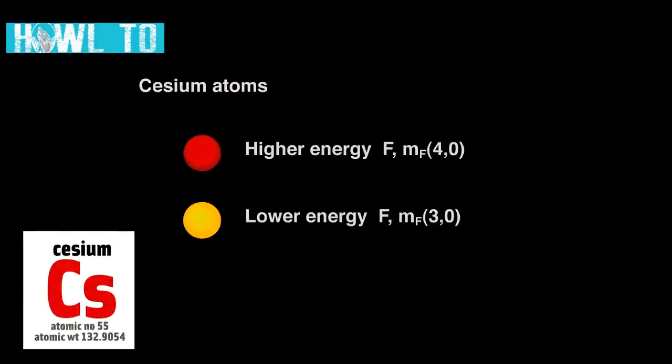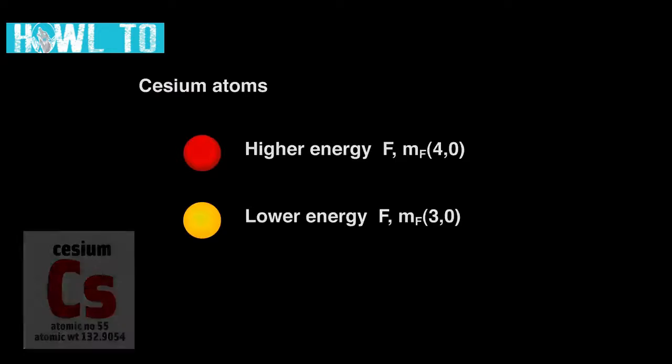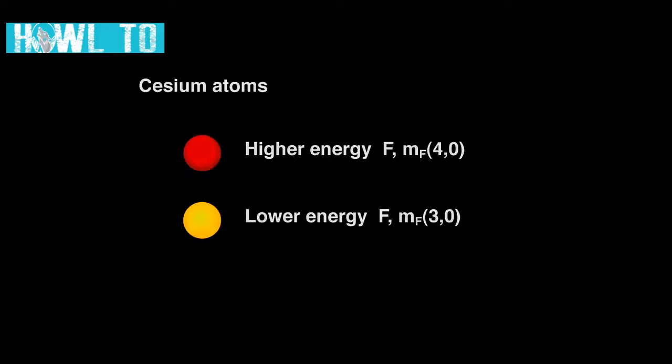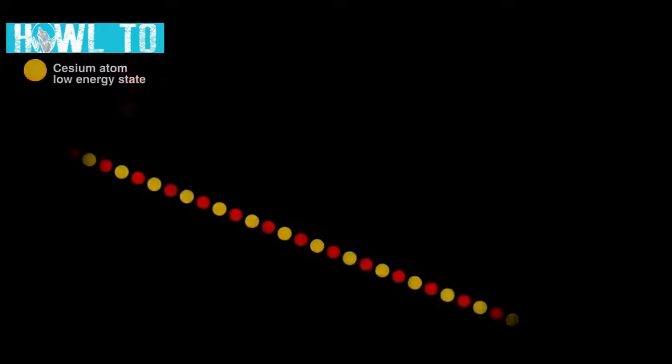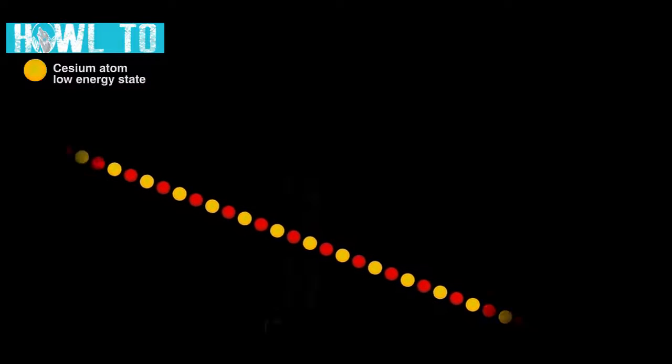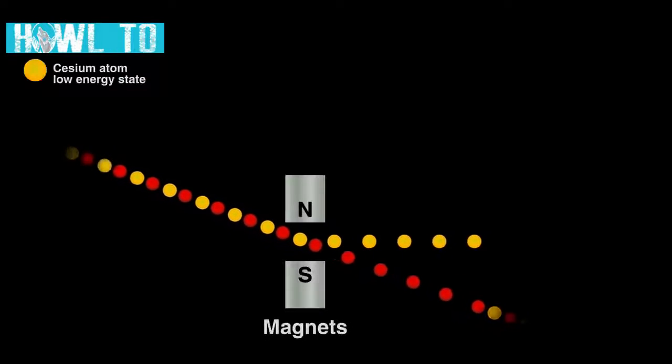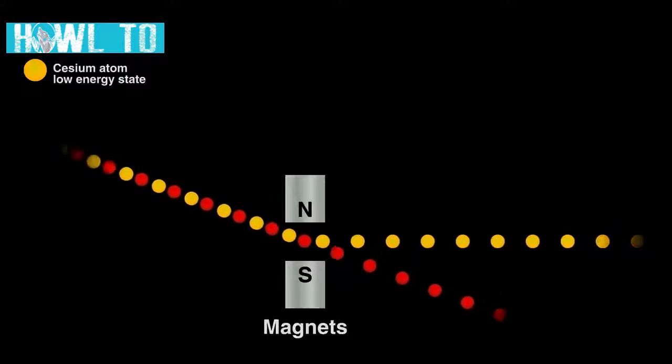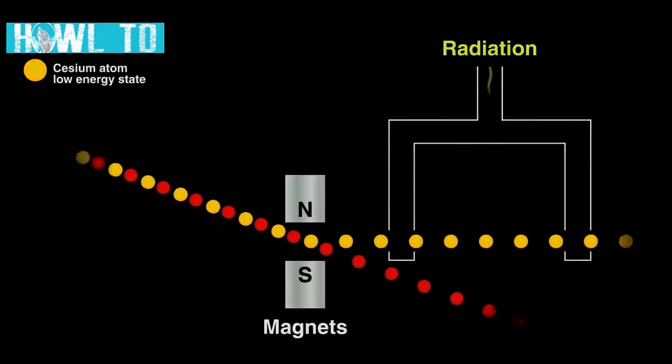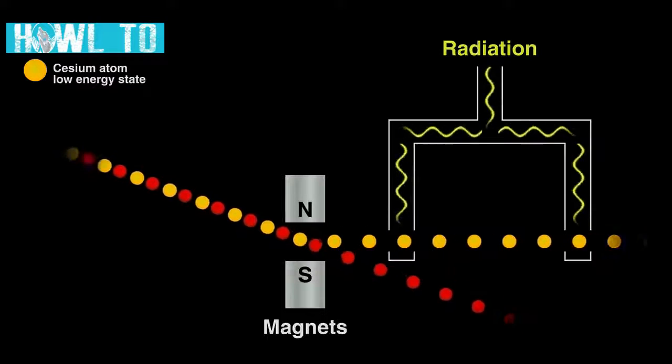The atoms in pure cesium exist mostly in two slightly different forms: a low energy form and one with just a bit more energy. For an atomic clock, these two states have two properties critical to making a clock. One, they can be separated by a magnet, and two, the lower energy atoms can be converted to the higher energy ones if we bombard cesium with the right radiation.